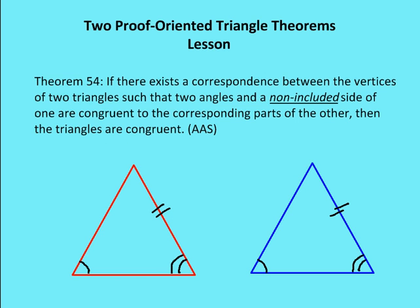Theorem 54 says if there exists a correspondence between the vertices of two triangles such that two angles and a non-included side of one are congruent to the corresponding parts of the other, then the triangles are congruent. An included side would be in between two angles; a non-included side would not be between the two angles and would share just one vertex.